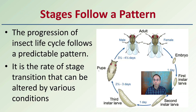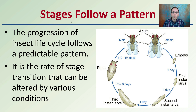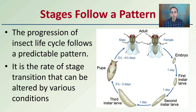Keep in mind that stages follow a pattern within insect development. Because there's a progression of the insect life cycle that follows a predictable and known pattern, the rate of stage transition can be altered by various conditions. Knowing what that alteration may be can allow us to backtrack to when the original time of death may have occurred, which is important when we're investigating crime scenes.